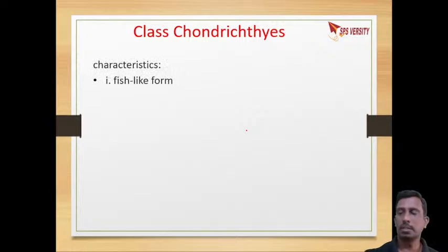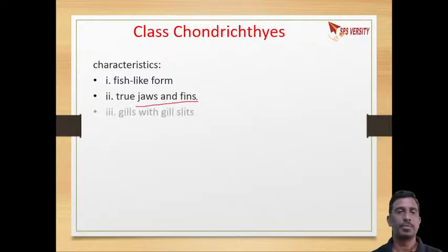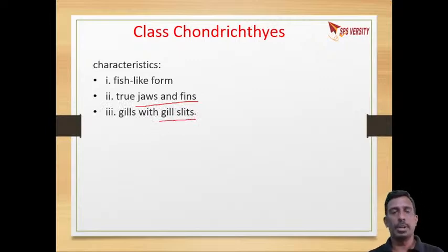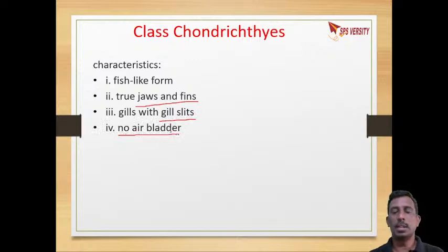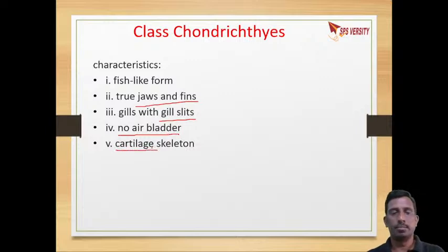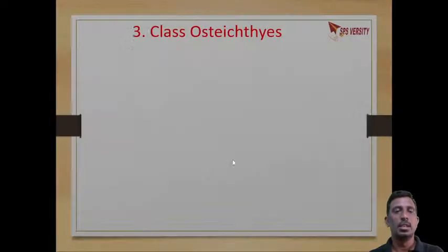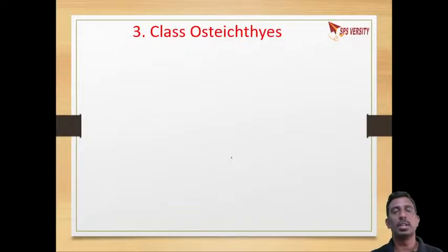Chondrichthyes means cartilaginous fishes. They have true jaws and fins, and gills with gill slits for respiration. There is no air bladder, and the skeleton is cartilaginous. Examples are sharks, skates, and rays — all come under Chondrichthyes.